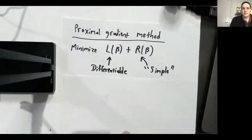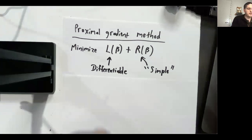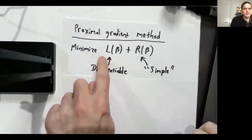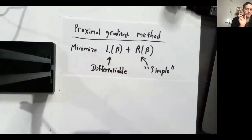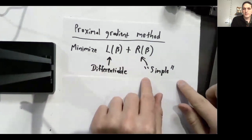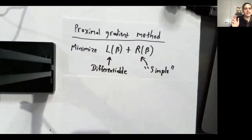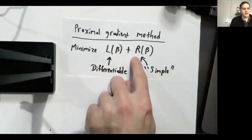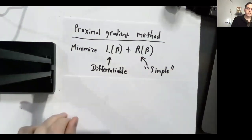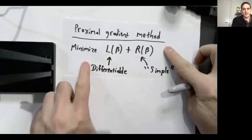Now I'm ready to explain the proximal gradient method. It is an optimization algorithm that solves problems of this special form: minimizing L of beta plus R of beta, where L is a smooth, differentiable function and R is a simple function. R is not required to be differentiable, but it is required to be simple — meaning it has a proximal operator that can be evaluated efficiently. For example, if R of beta equals the L1 norm of beta, there is a simple formula for the proximal operator of R, which makes it a valid choice for this method.